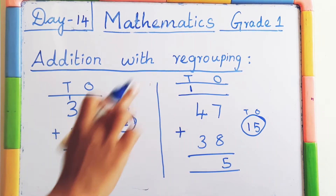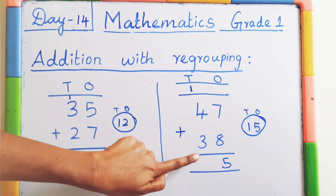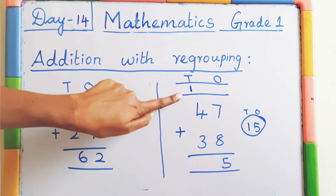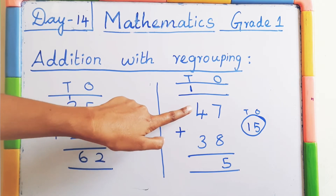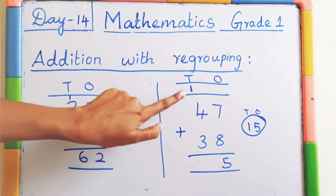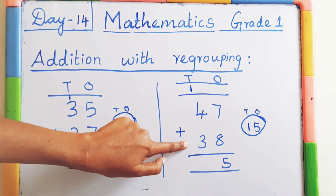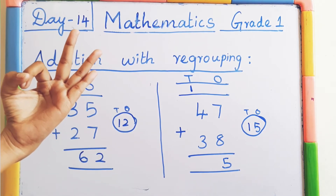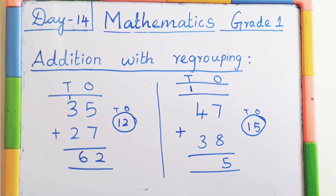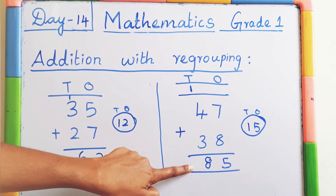I left the space here to write the carry over number. Add 1 in the tens place. Now add 1 plus 4 plus 3 — three numbers are in the tens place. First add with the carry over: 1 plus 4 equals 5. Then 5 plus 3: keep 5 in the mind, 3 on the finger — after 5: 6, 7, 8. The answer is 85. So 47 plus 38 equals 85. Very good.